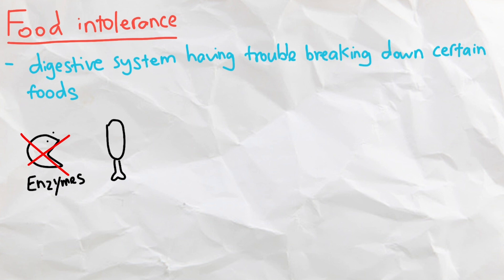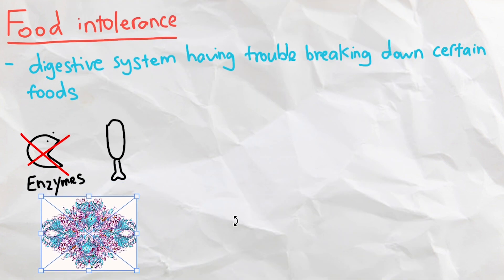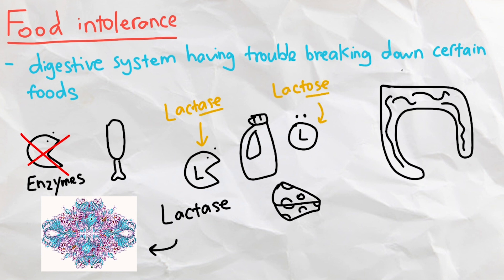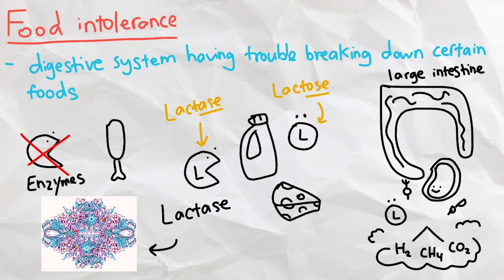The most common example is lactose intolerance, which is when your digestive system isn't producing enough lactase. Lactase is responsible for breaking down lactose in foods such as milk and other dairy products in the small intestine. However, if too much lactose travels to the large intestine undigested, the bacteria inside the colon will start digesting it, releasing a lot of hydrogen, methane, and carbon dioxide gas.